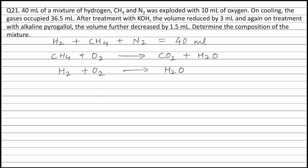On cooling, the gases occupied 36.5 ml. So at the end of the reaction, the gases that are present are carbon dioxide plus remaining Oxygen plus Nitrogen, and this is equal to 36.5 ml.